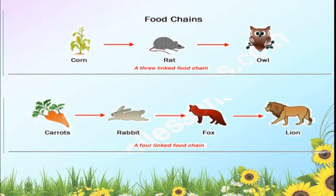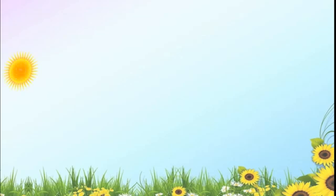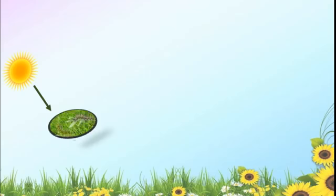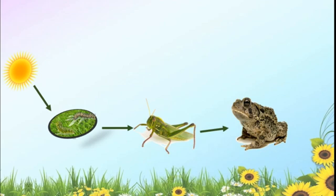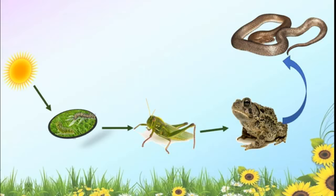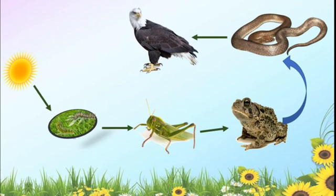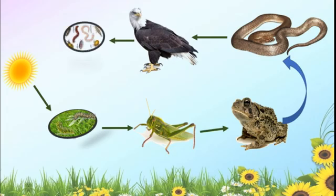We will study one more food chain, a lengthier one. By the help of sunlight, the grass prepares its own food. There are some insects on the grass. The grasshopper eats the leaves, the grass, and also the small worms present in the grass. This frog eats grasshoppers. Frog is the food for snake, and snake is the food for eagle. And when the eagle dies, the microorganisms feed on it. This is the longest food chain.